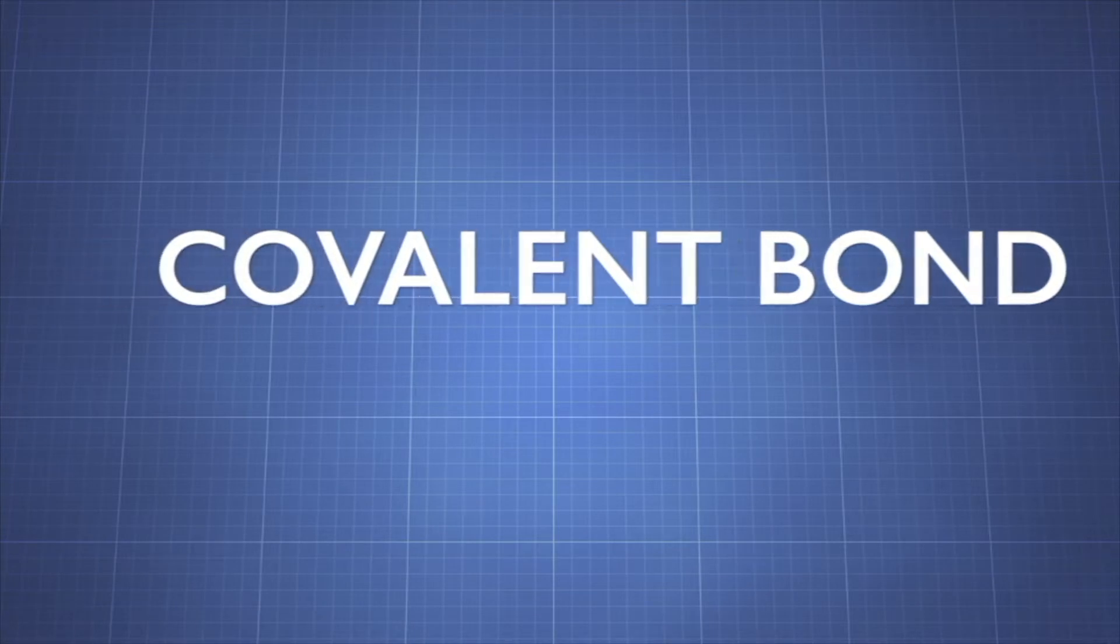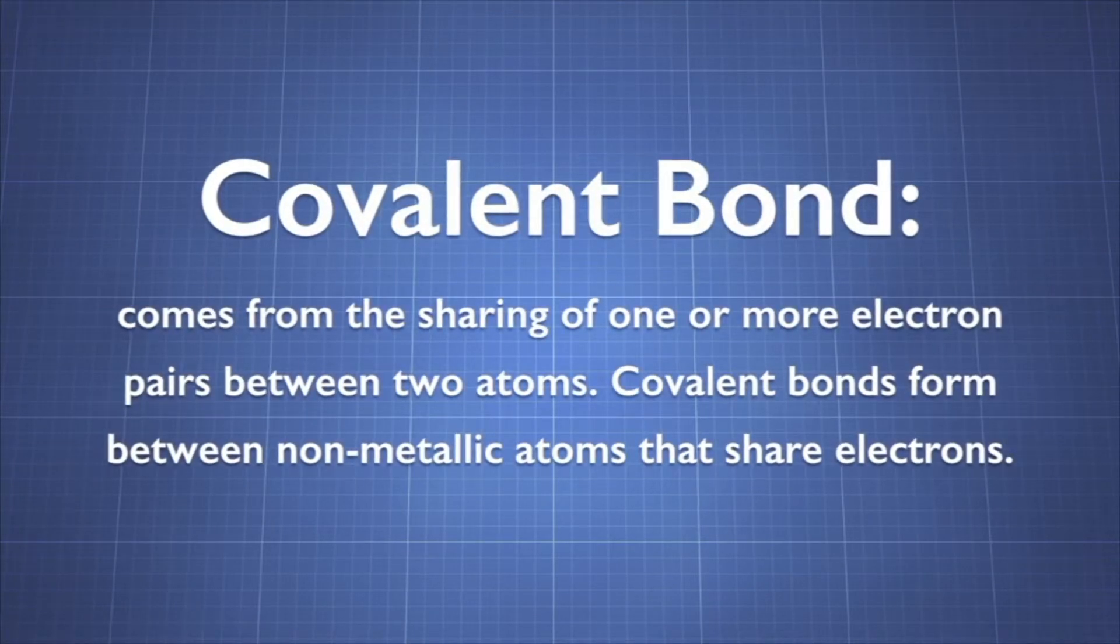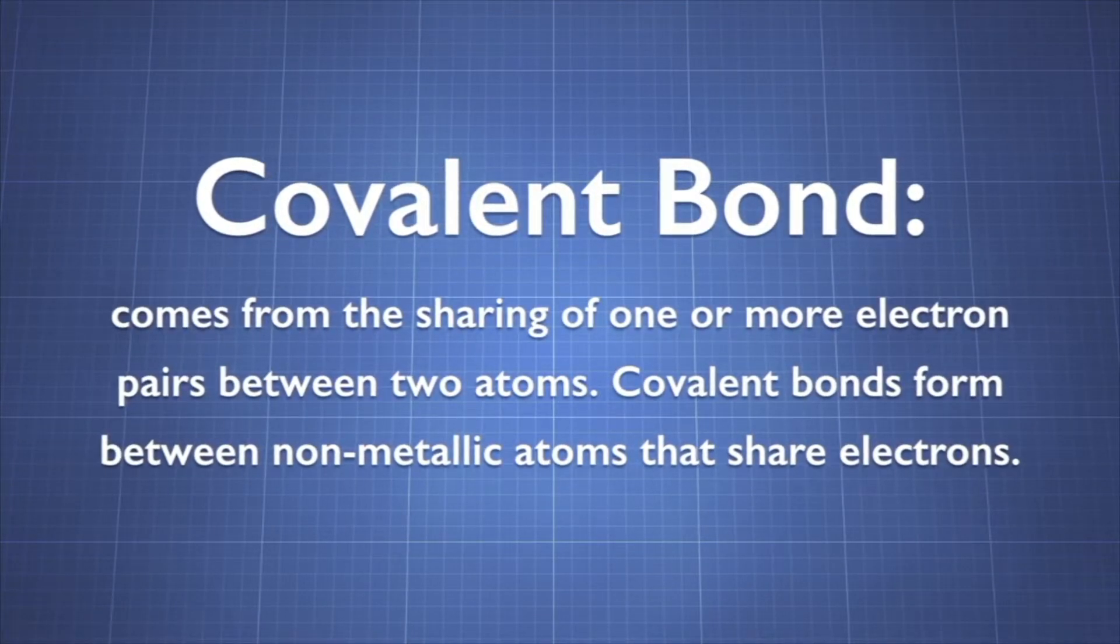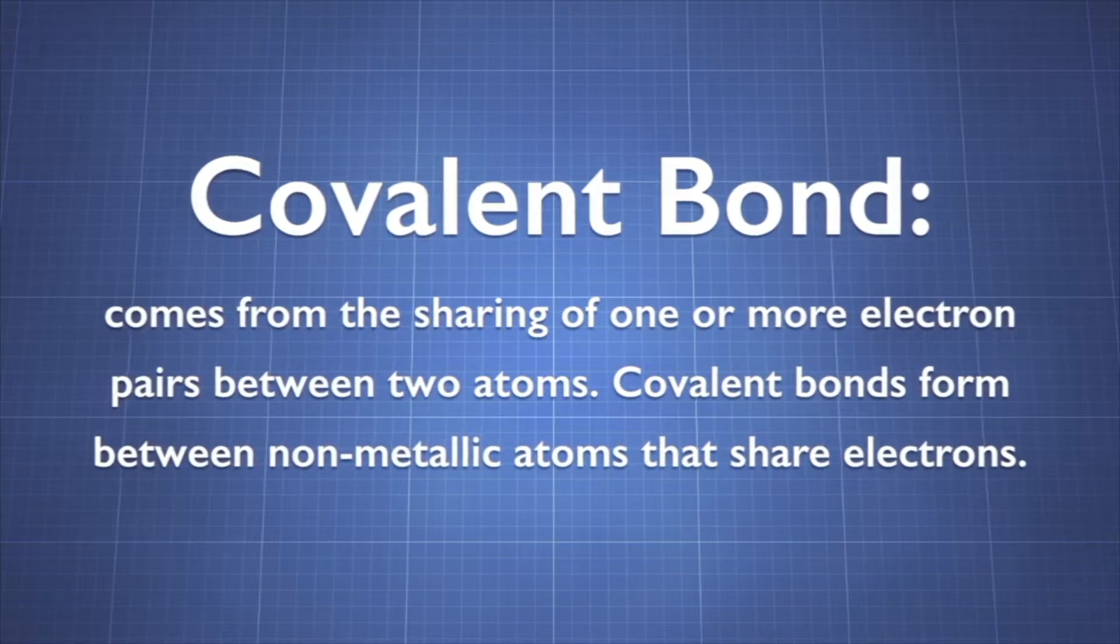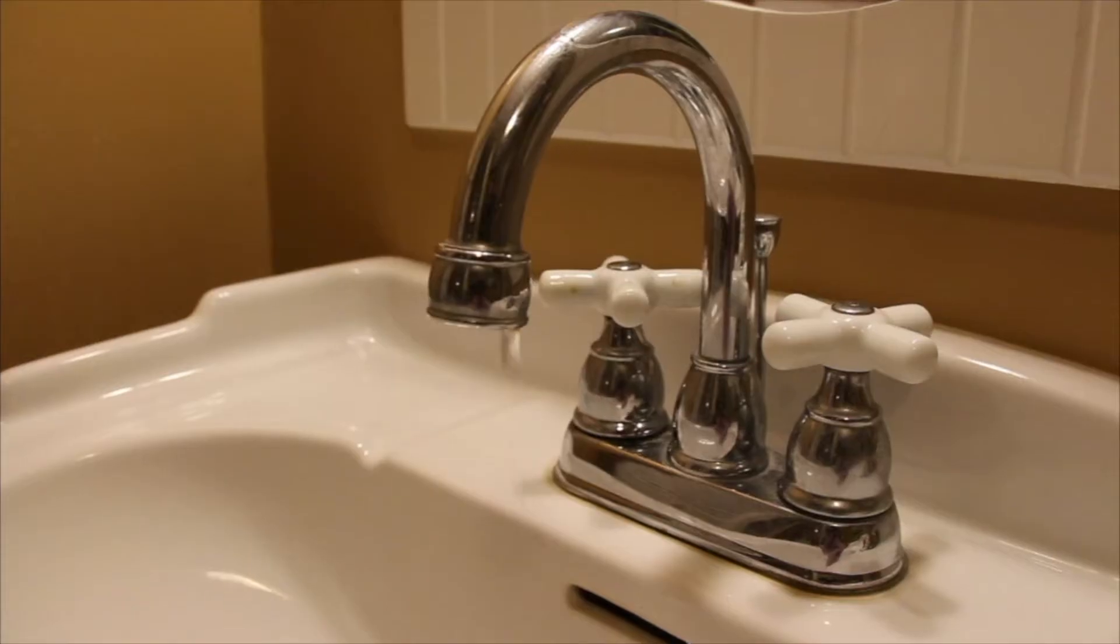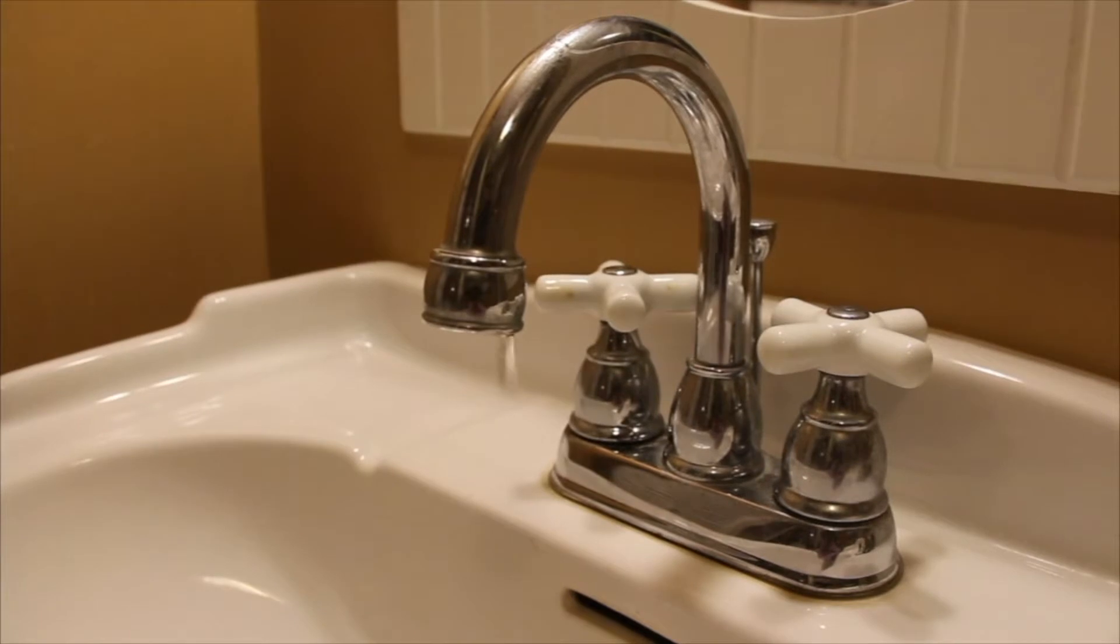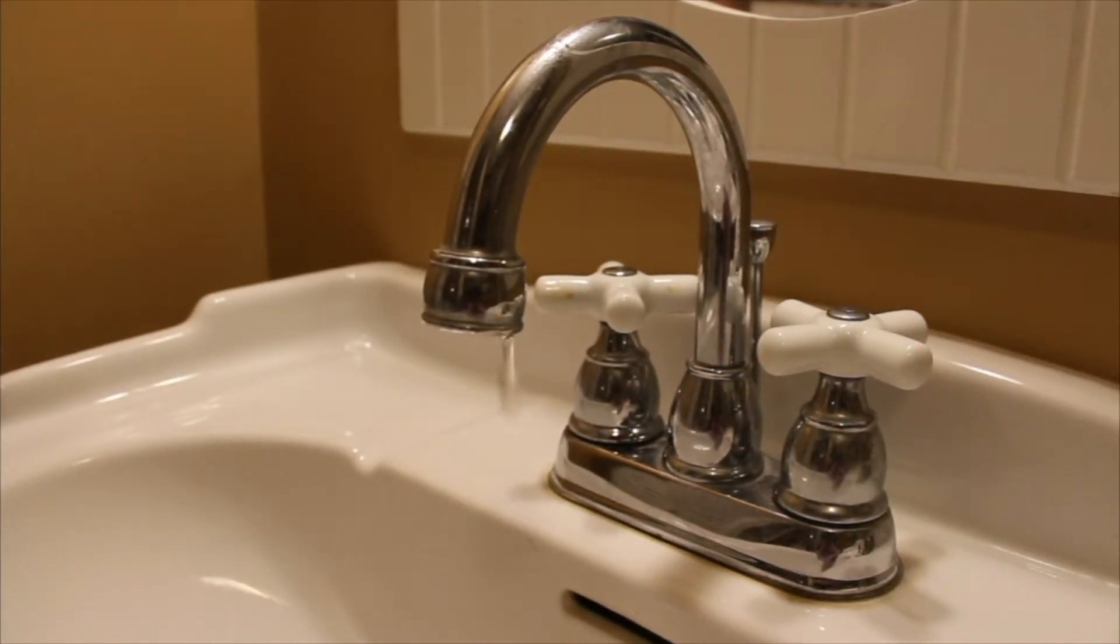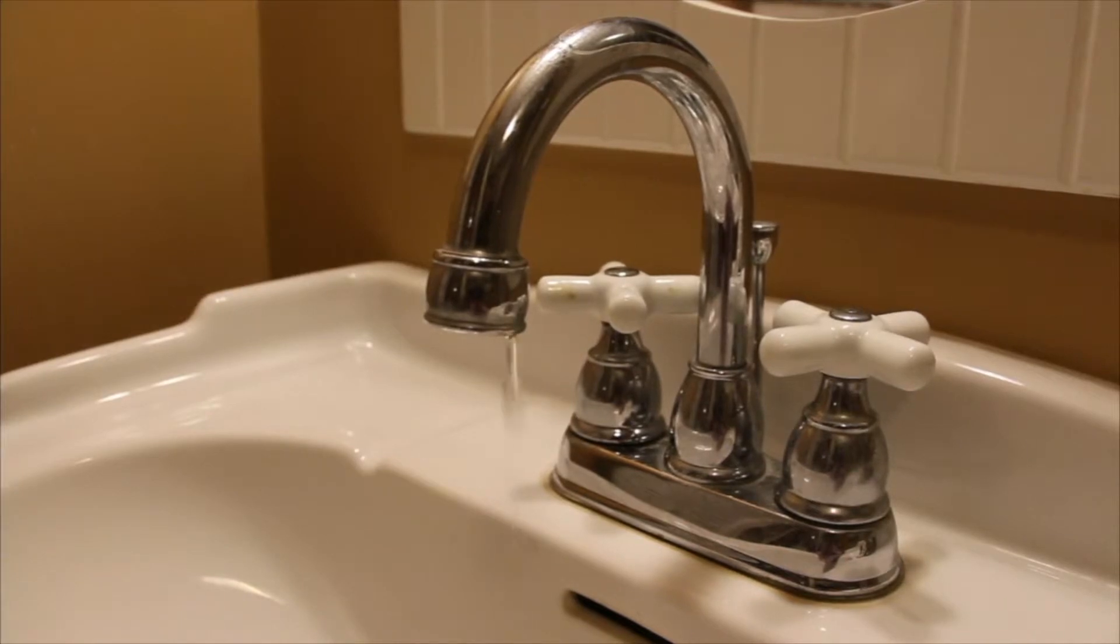A covalent bond forms when two atoms share one or more electron pairs. Covalent bonds form between non-metallic atoms. For example, a water molecule is formed by a covalent bond. It is composed of two atoms of hydrogen covalently bonded to one atom of oxygen.